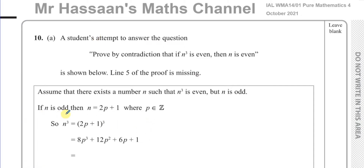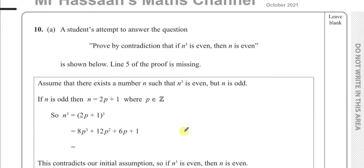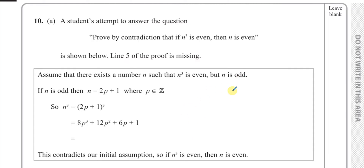So if n is odd — an odd number is always going to be something which is either one more or one less than a multiple of two. Because even numbers are multiples of two; if you add one to an even number you get an odd number, and if you take away one from an even number you get an odd number. So if we say n is odd, then n equals two times an integer plus one, then for sure n is an odd number. So p is an element of the integers, n equals 2p + 1, n must be odd. Now if we want to cube this odd number, we're going to end up with (2p + 1) cubed.